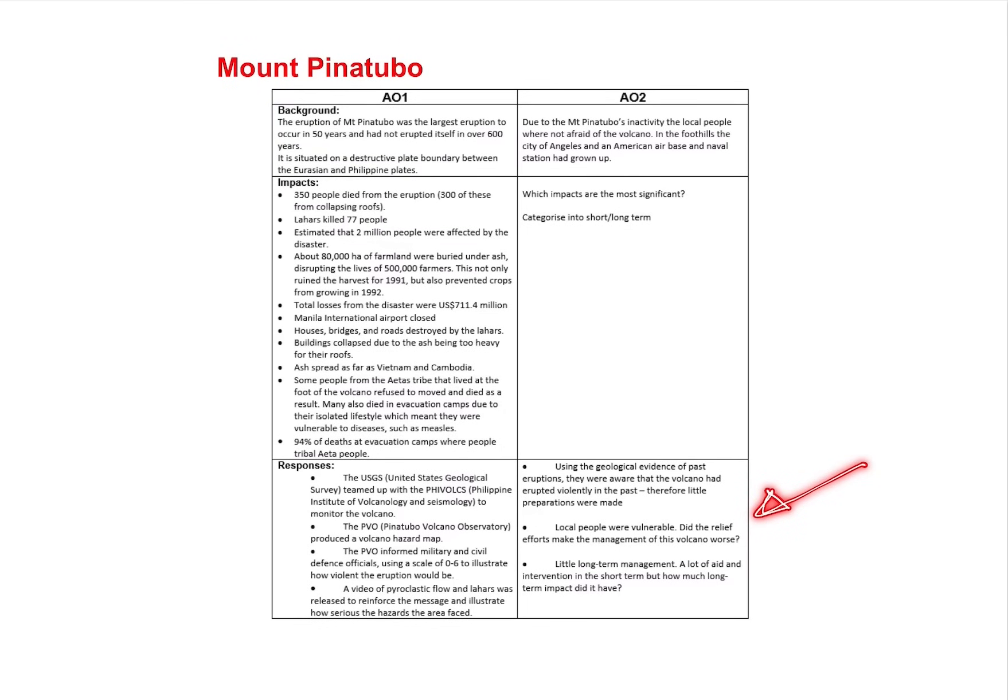You've got little long term management, really. You've still got the local people that are left vulnerable. Using the geological evidence, we are aware that the volcano erupted violently in the past, but still no preparation had been made. So you could argue they've been let down by the planning and the responses previously. If we go back to that park model and the hazard management cycle, the latter steps of each of those don't really appear to have happened here, which is perhaps why some of these responses aren't as great as they could have been.